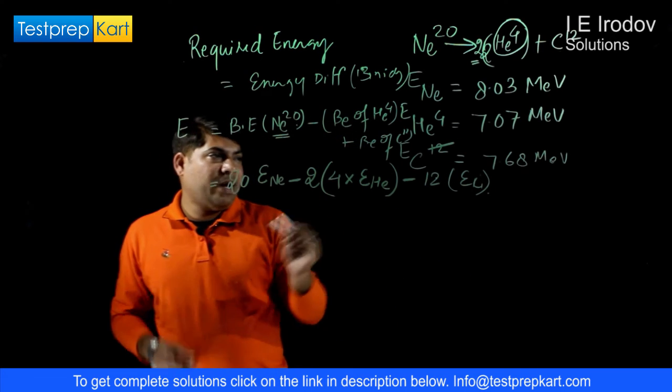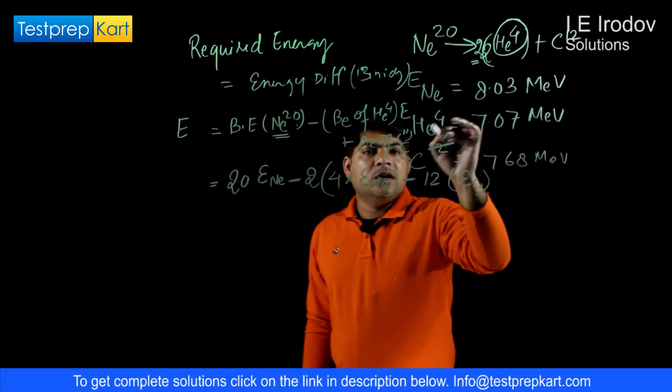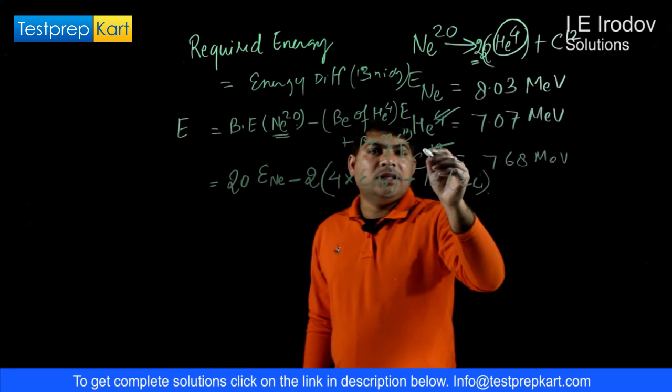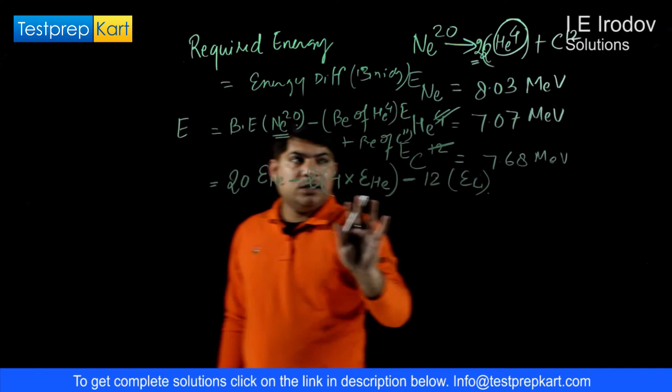Now, here is a minor mistake in notations. We must write this is energy of helium per nucleon and this is energy of Carbon per nucleon.